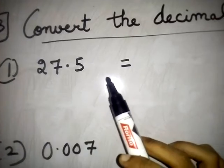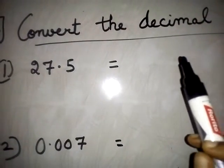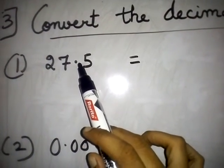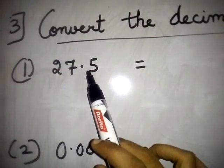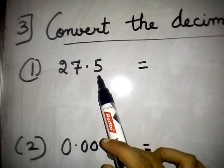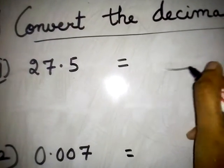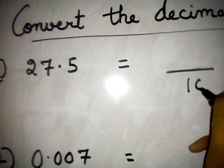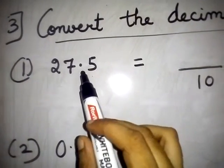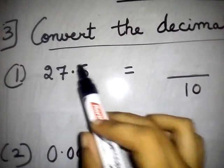Here I am teaching. If you want to convert decimal fractions into common fractions, you have to write in numerator and denominator form, and you have to remove the decimal point. Here 27.5 means 1 decimal place — after the decimal point, 1 digit is there. So the denominator will be 10. If 1 decimal place is there, denominator will be 10. Remove the decimal point and write.